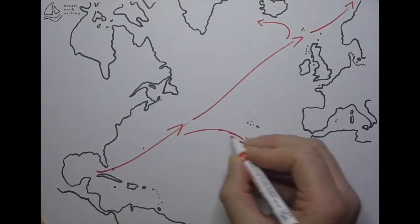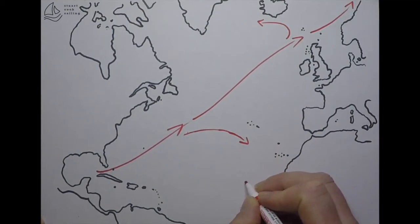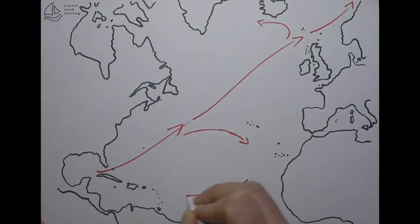On the underside of the Azores High, we've got the feeding force from all those northeasterly winds getting pushed across. We get our equatorial current coming back across the Atlantic.